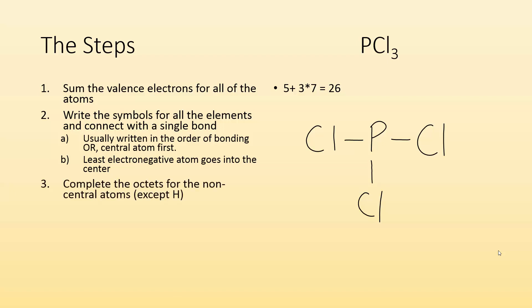Next is to complete the octets for the non-central atoms. Hydrogen is going to be one of those exceptions because hydrogen only wants two. Now let me complete the octets for the non-central atoms, those are all those chlorines. So completed the octets for those chlorines.